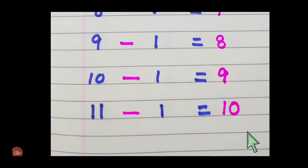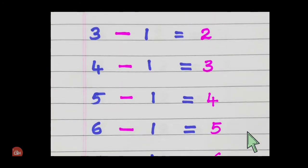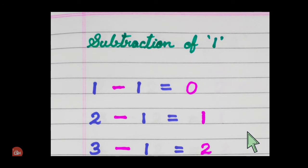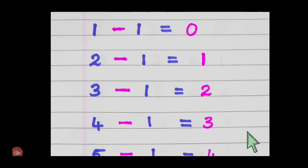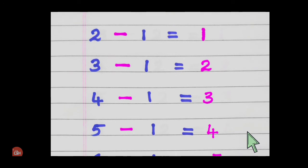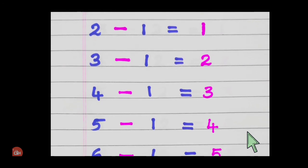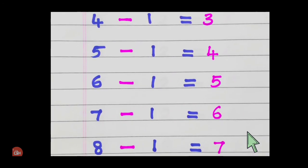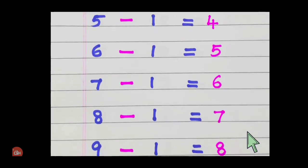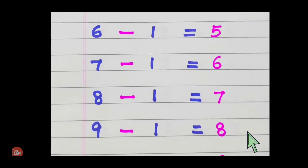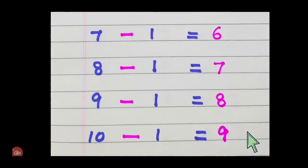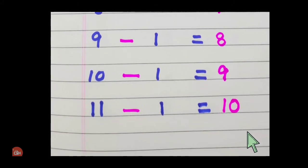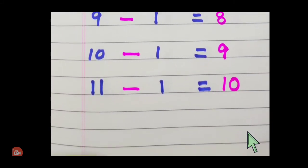Once again: one minus one zero, two minus one one, three minus one two, four minus one three, five minus one four, six minus one five, seven minus one six, eight minus one seven, nine minus one eight, ten minus one nine, eleven minus one ten.